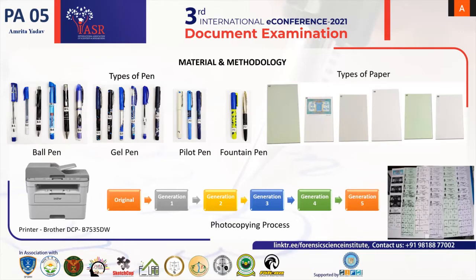The various materials and methodologies used are: pen types including ball pen, gel pen, pilot pen, and fountain pen; paper types including legal size paper, stamp paper, bond paper, legal white paper, A4 size legal paper, and A4 size white paper used for legal purposes. The printer used for making multi-generation copies was the Brother DCP-B753DW, and using this, we made various generations of photocopies.